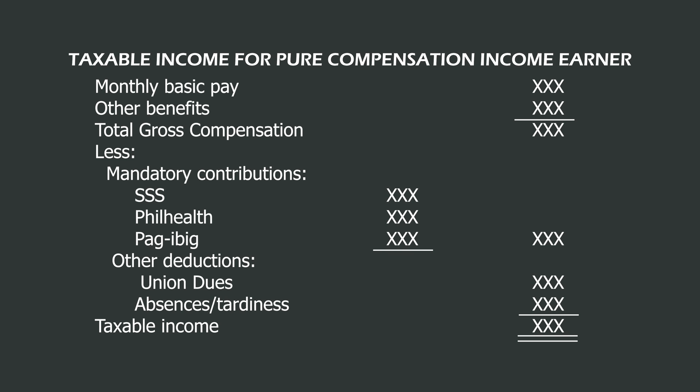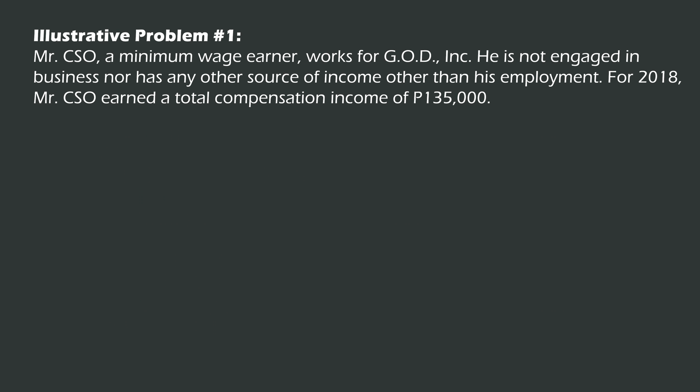Taxable income for compensation earners is the gross compensation income less non-taxable income or benefits, such as but not limited to the 13th month pay and other benefits subject to limitations, de minimis benefits, and the employee share in SSS, GSIS, PhilHealth, and HDMF contributions, and union dues.